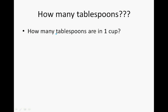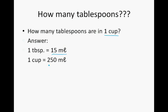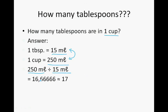How many tablespoons are in 1 cup? Now, 1 tablespoon is 15 milliliters and 1 cup is 250 milliliters. When doing measurement calculations, we need to have the same units, so we compare milliliters with milliliters. We take the 250 milliliters and divide by 15 milliliters. 250 divided by 15 equals 16.666 repeating, which we round, and so there are almost 17 tablespoons in 1 cup.